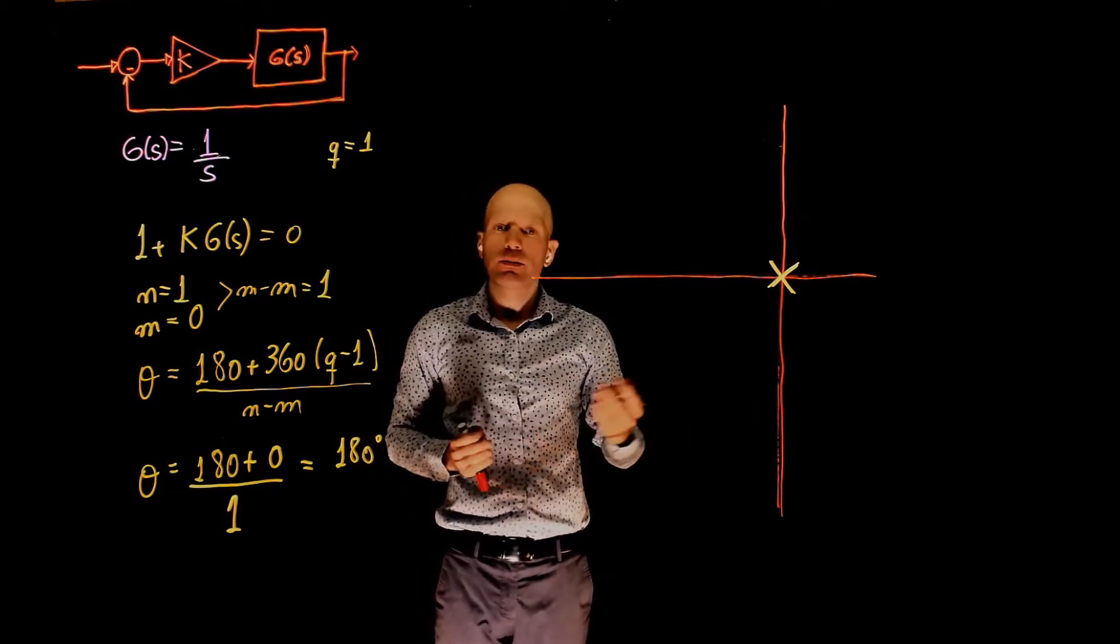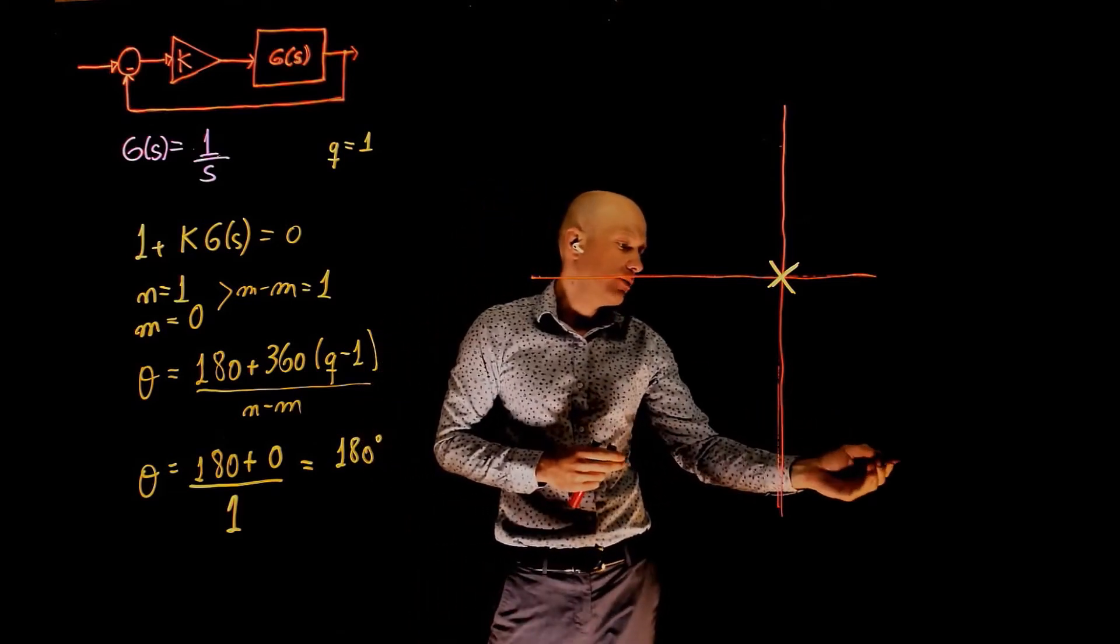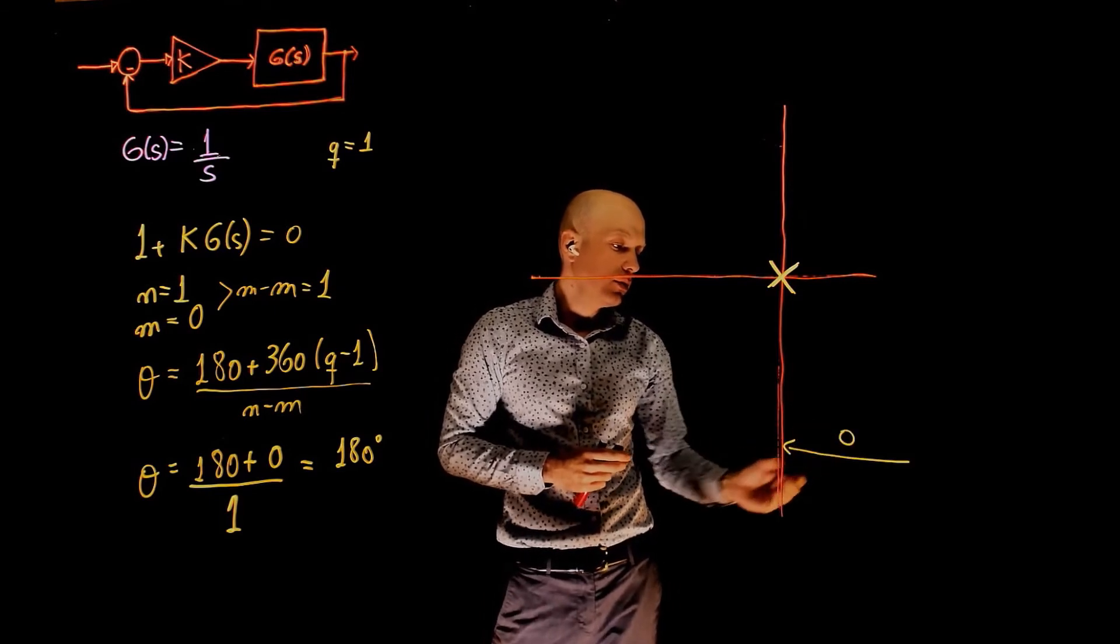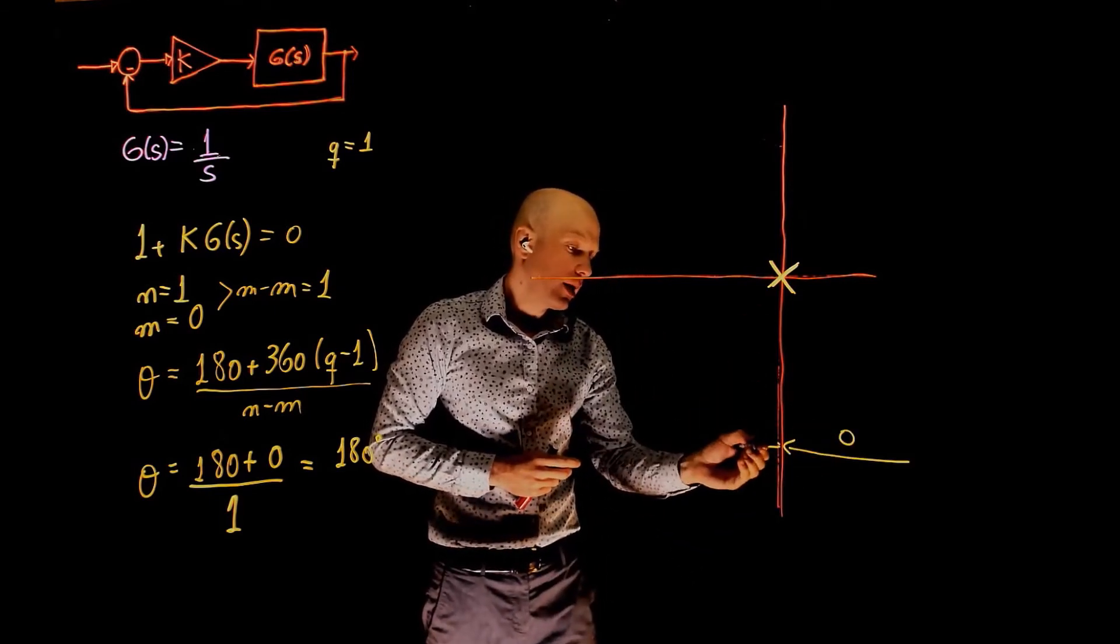Now let's count the number of poles and zeros starting from plus infinity. We have up to here, we have 0, and past that pole, the count becomes 1.